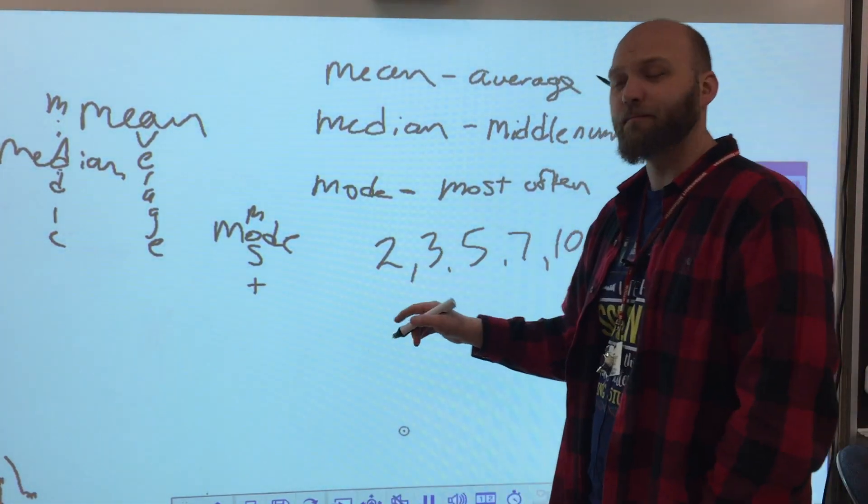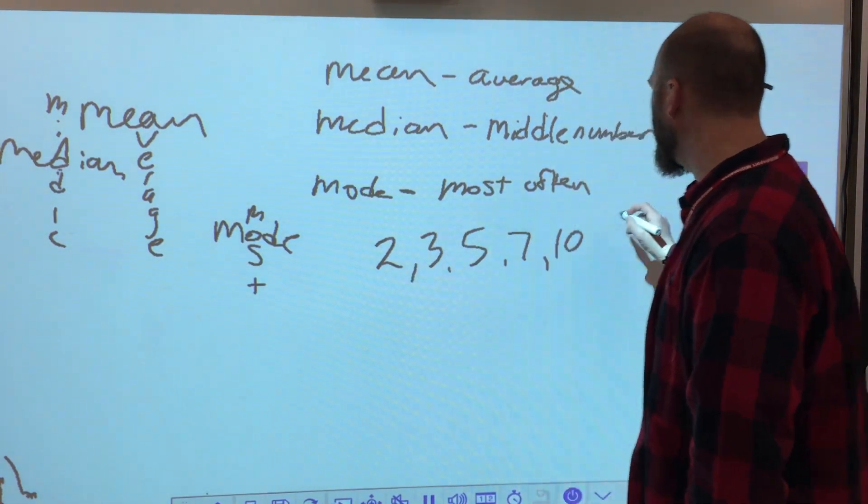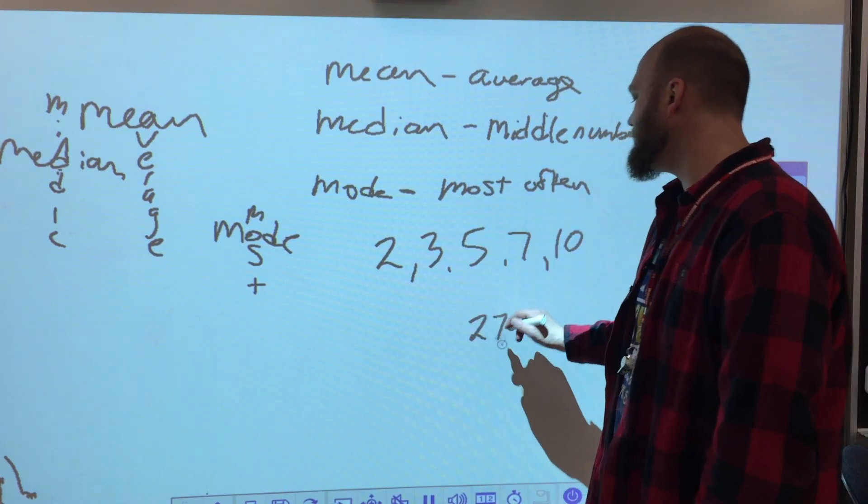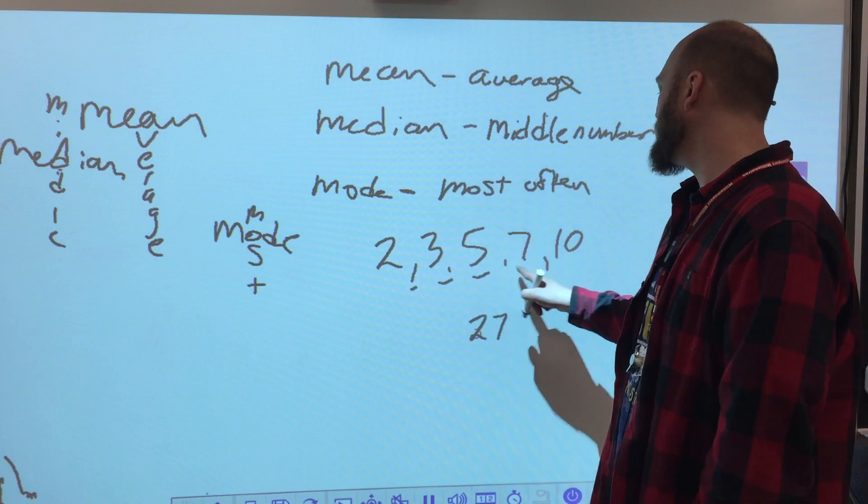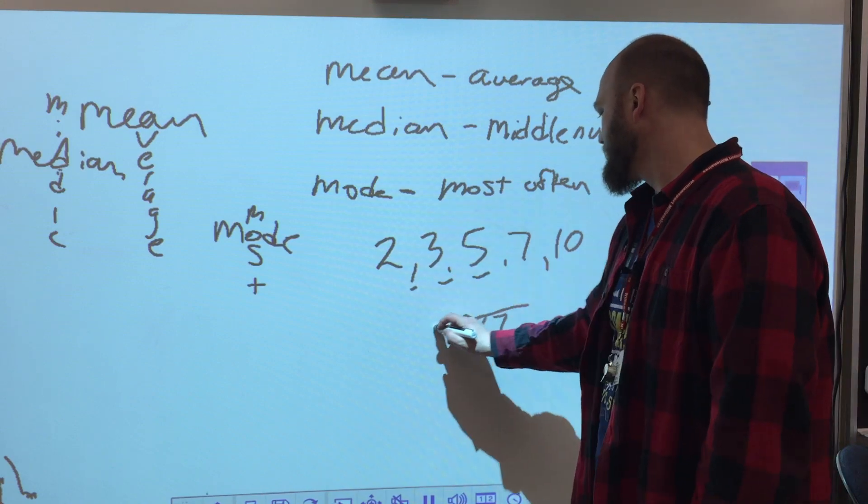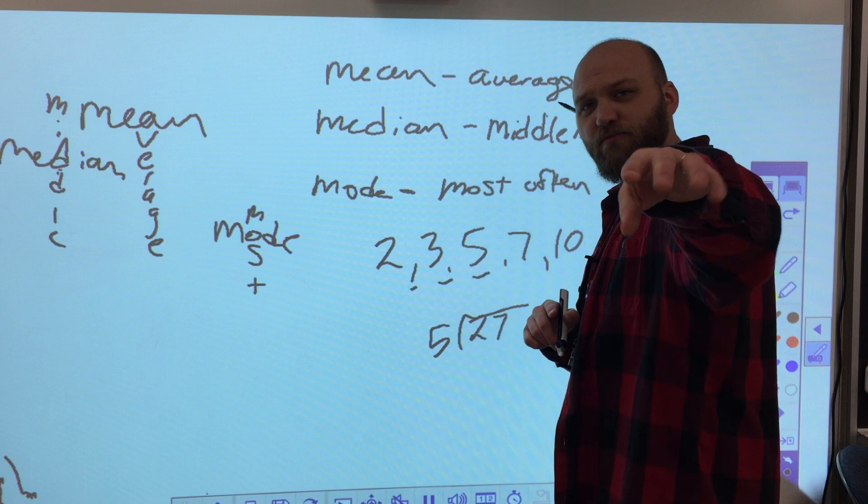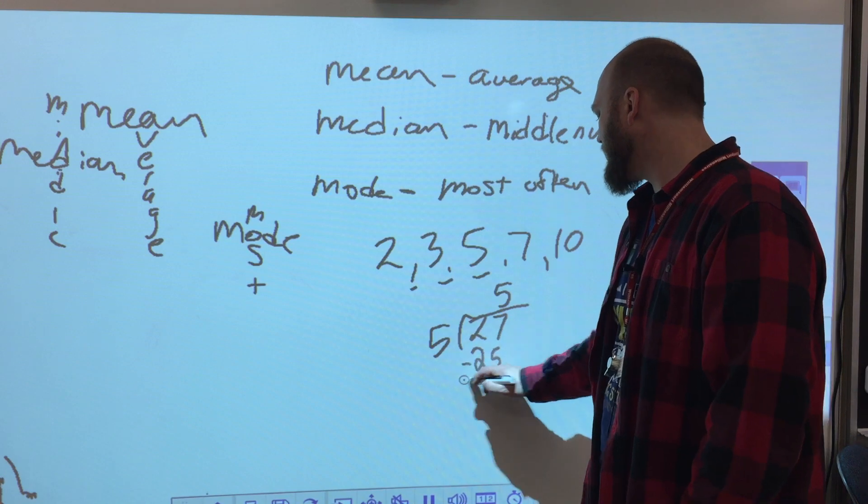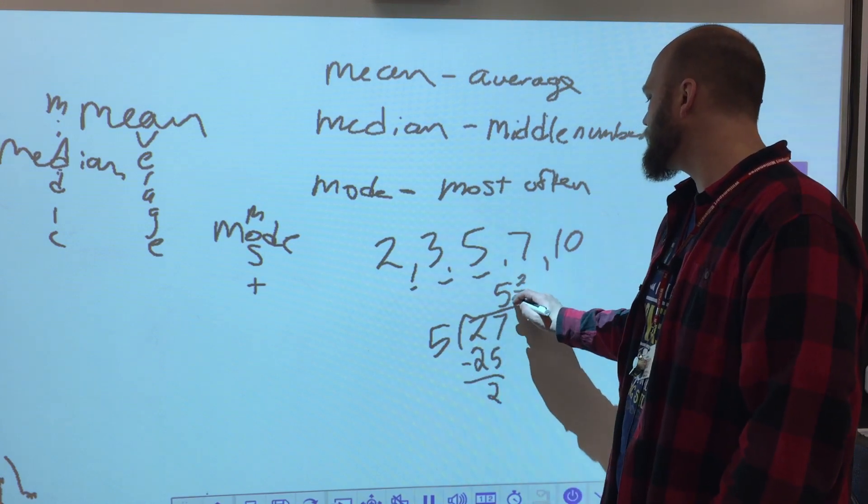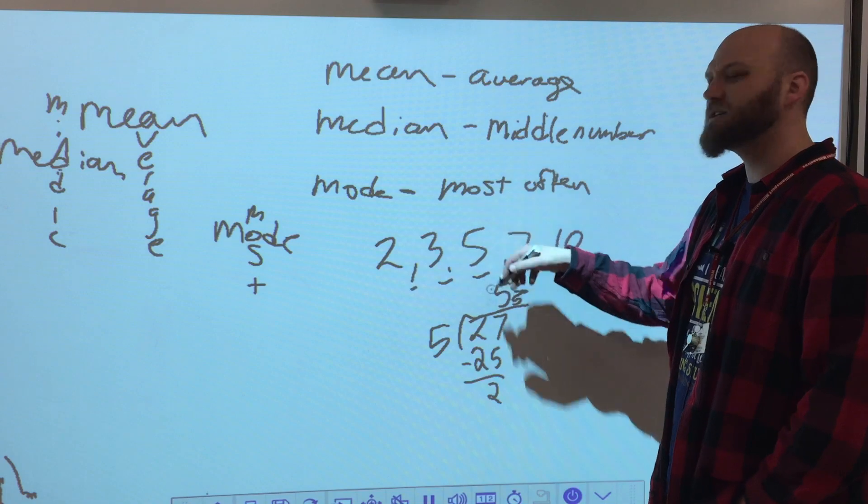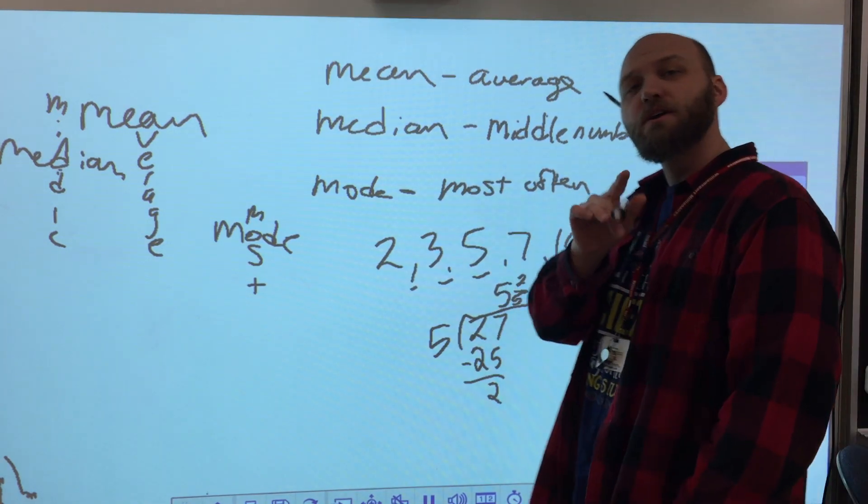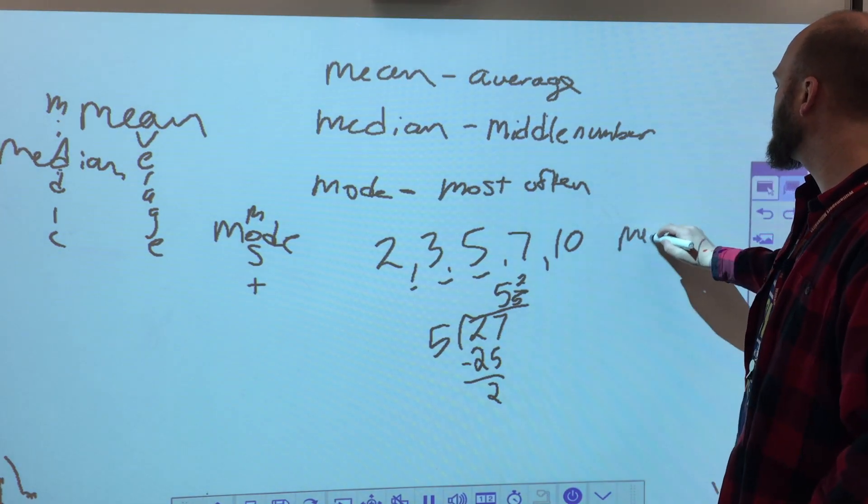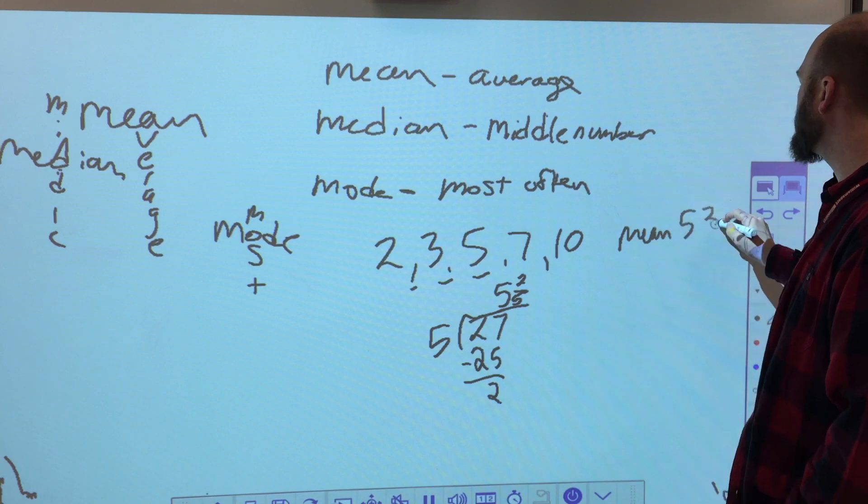I'm going to add them all up. 2 plus 3 is 5, plus 5 is 10, plus 7 is 17, plus 10. So I have 27 when I add them all up and I have 1, 2, 3, 4, 5 data points. We're solving for the mean, the average. 5 goes into 27, 5 times. That's 25 and I'm left with 2. That's 2 fifths, 5 and 2 fifths. So my mean would be 5 and 2 fifths.